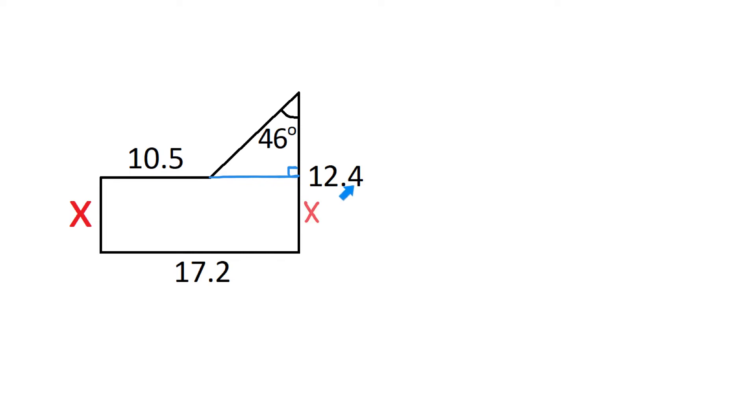Let's move this 12.4 slightly to the right. And now in this right triangle, if we could find the right side, then we would subtract it from 12.4 and we would find X.